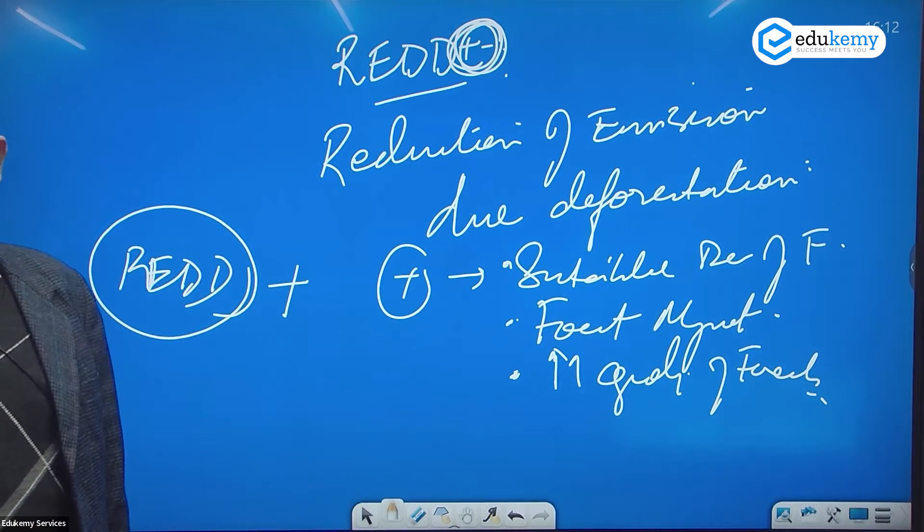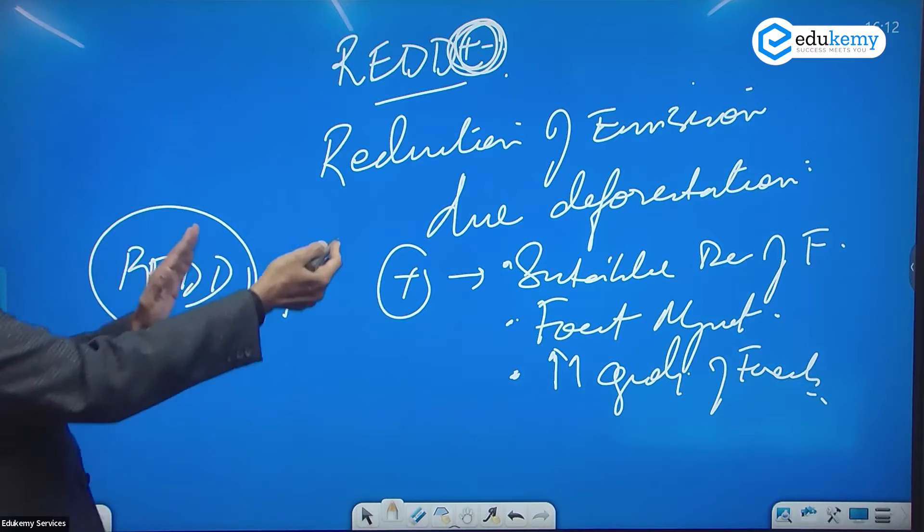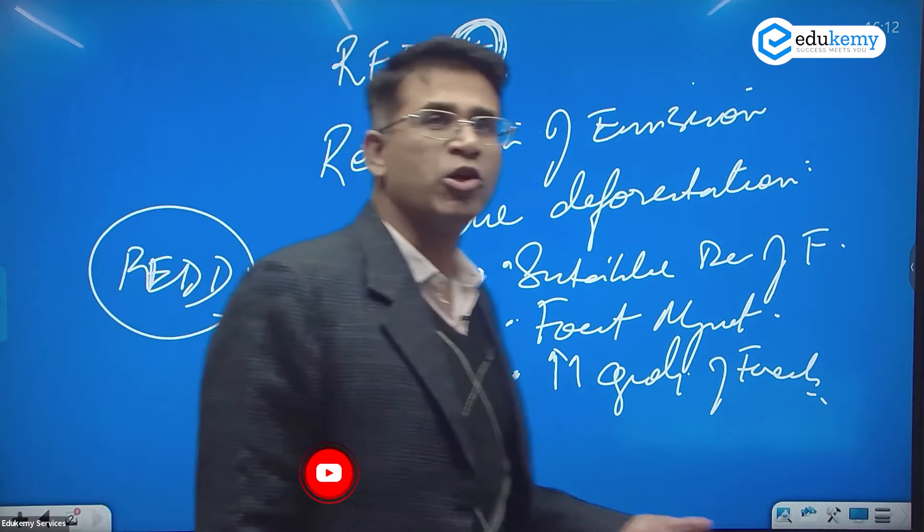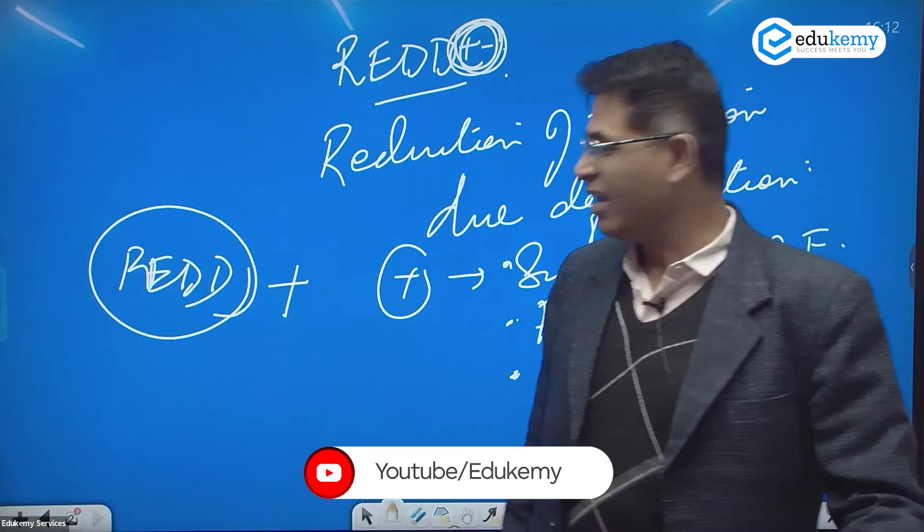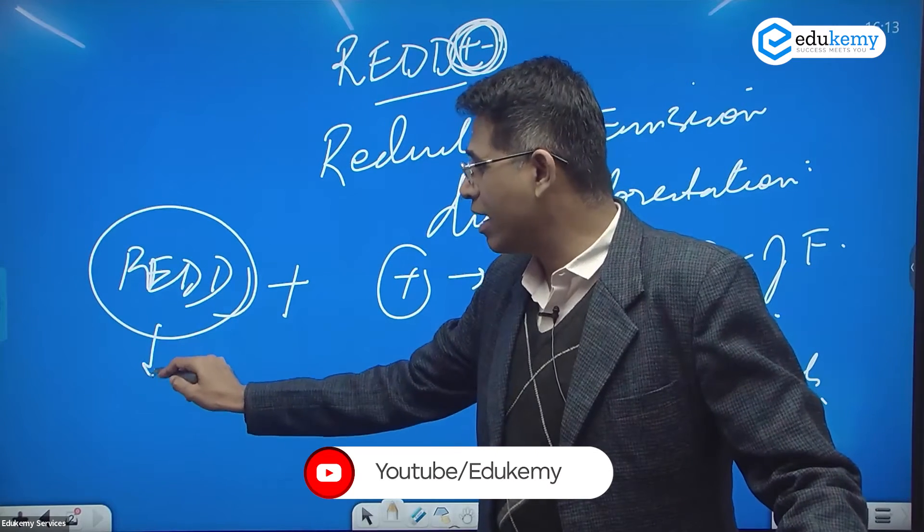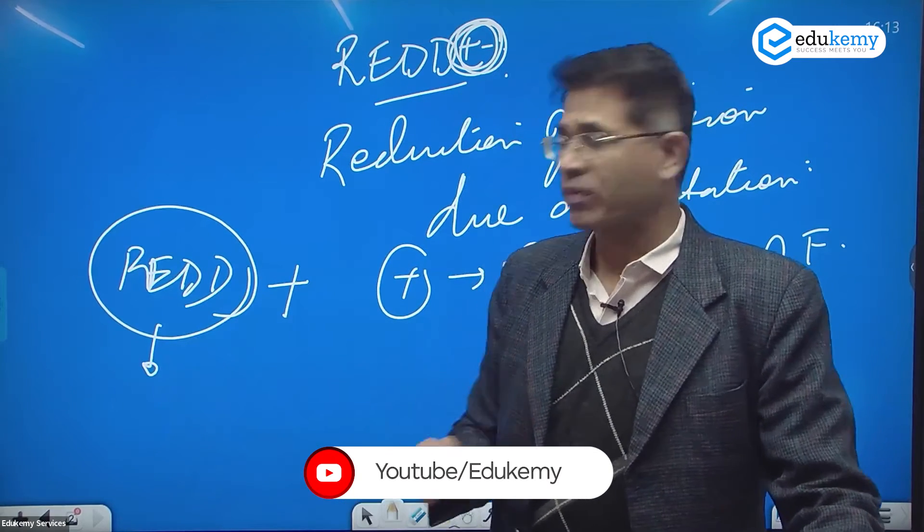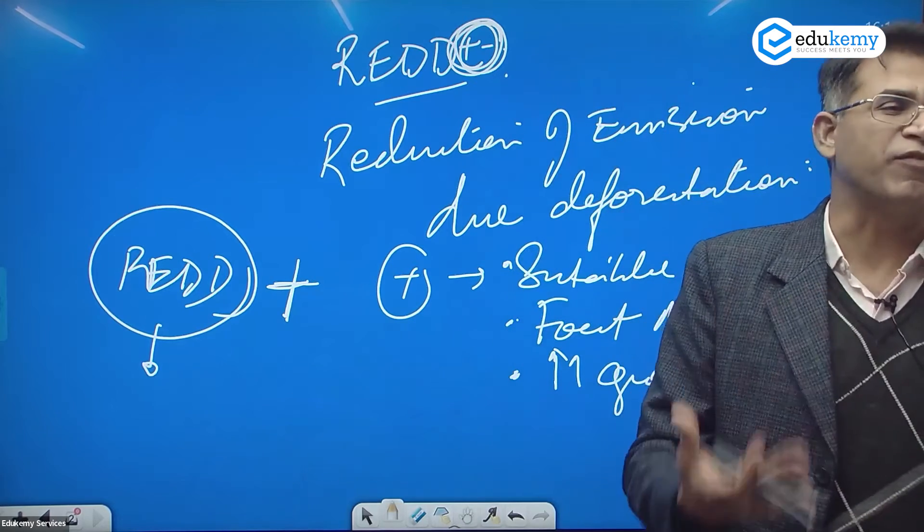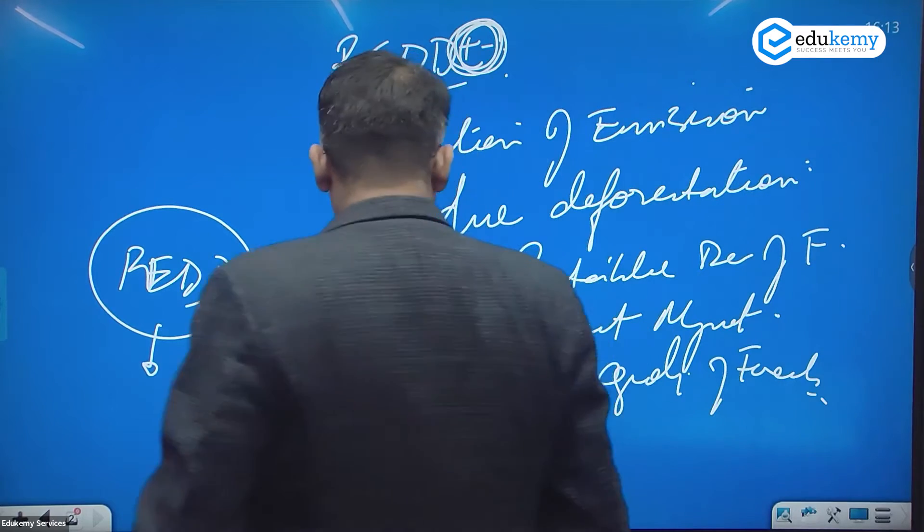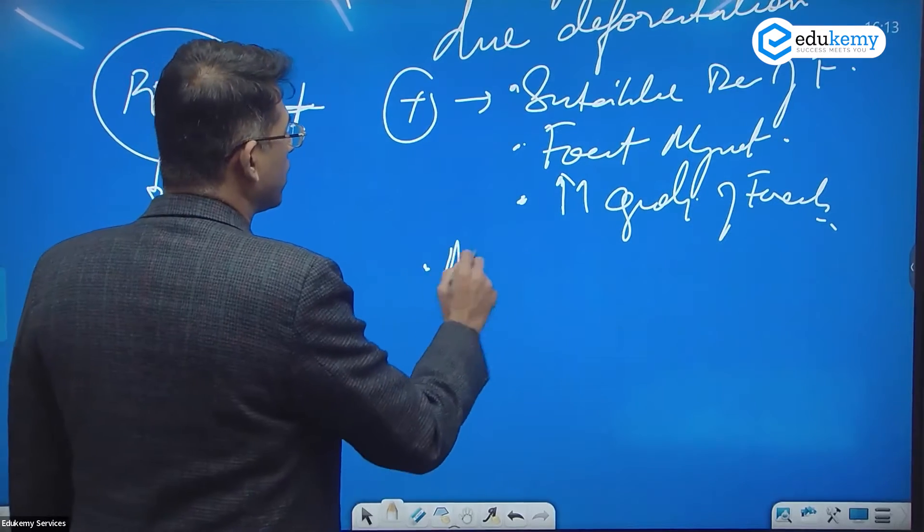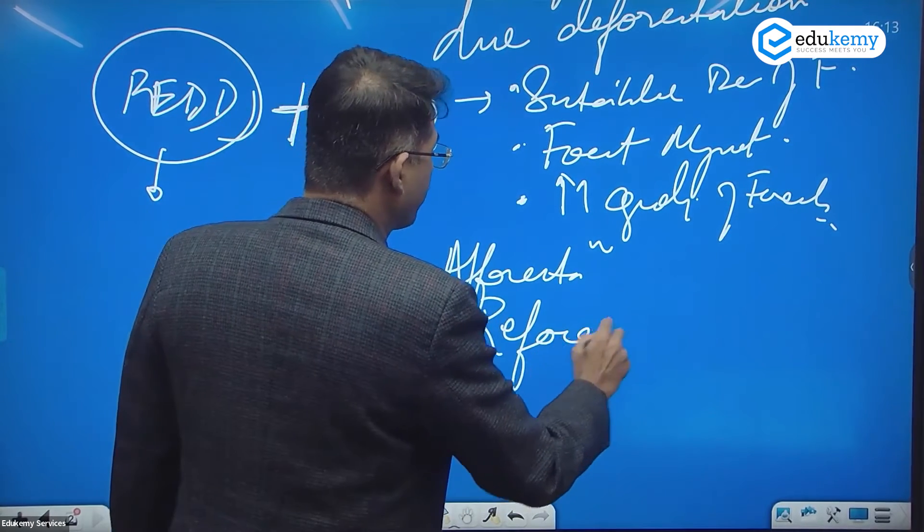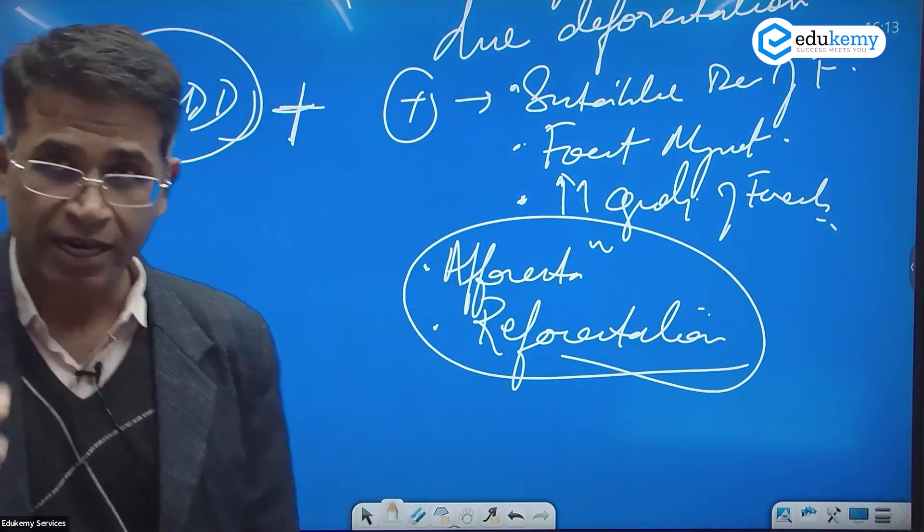That's how they added the word plus. RED was reducing emissions due to deforestation, so this was about don't allow forests to be cut. But when they added plus, it was about managing the forests. As a part of REDD+, they include afforestation and also reforestation. Now you know what REDD+ is.